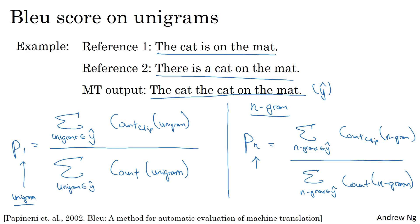One thing you can convince yourself of is that if the MT output is exactly the same as either reference one or reference two, then all of these values — p1, p2, and so on — will all be equal to 1.0. To get a modified precision of 1.0, you just have to be exactly equal to one of the references. Sometimes it's possible to achieve this even if you aren't exactly the same as any single reference, by combining them in a way that still results in a good translation.